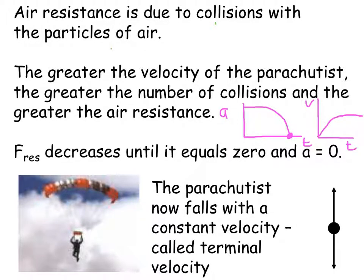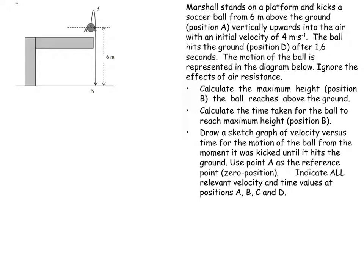Let's look at an example of vertical projectile motion. We've got a guy standing on a platform and he kicks a soccer ball from 6 meters above the ground, which we've labeled position A, and into the air with an initial velocity of 4 meters per second. The ball hits the ground at position D after 1.6 seconds. Ignore the effects of air resistance. Calculate the maximum height the ball reaches above the ground.